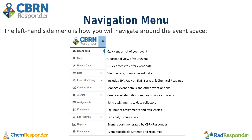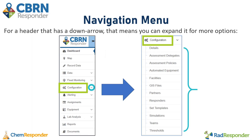After you've taken a look at the event dashboard to get some bearings as to what's going on within the event, you can use the left-hand side navigation menu to navigate around the event space. The Map and Data sections are what we'll cover next, but you can open up the configuration menu to manage details such as partners, responders, and assessment policies. You can create alert definitions, assignments, and assign equipment. You also have reports generated by CBRN Responder, and you can store documents in the event-specific document library. For any header that has a drop-down arrow, you can expand it for more options — for example, the configuration menu lets you view event details, assessment policies and delegates, facilities, GIS files, responders, teams, thresholds, and more.